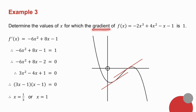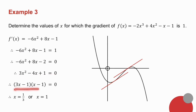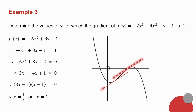Whenever you see the word gradient in calculus, find the derivative. So I get the derivative, and I've told you that the gradient is 1. So I make the derivative equal to 1, set up my trinomial, factorize it, and I get two values for x. When x is a third, or when x is 1, my gradient is equal to 1. I've drawn a cubic graph — we'll discuss cubic graphs in more detail in the next video. There are two points on my graph where the gradient is 1, and those are my two answers.